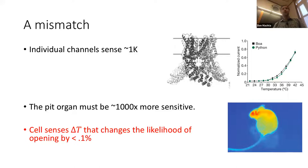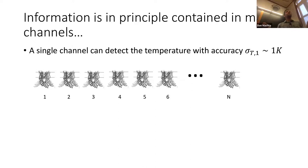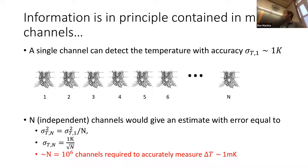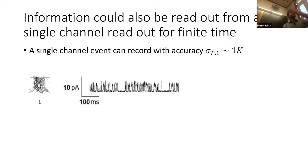The pit organ can detect something like a mouse at about one meter distance — a back-of-the-envelope calculation suggests the pit membrane should heat up by about one millikelvin. Careful experiments suggest this ability resides in single neurons. So this is the mismatch: a TRP channel is sensitive to roughly a one-degree Kelvin change in temperature, but to be functional the pit organ needs to be about a thousand times more sensitive, and the cell needs to sense a change in temperature that changes the likelihood of one channel opening by only 0.1%.